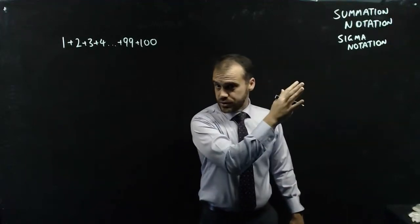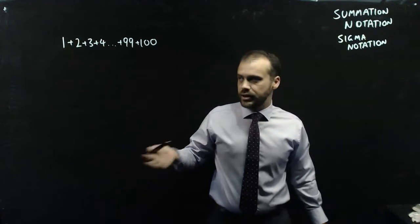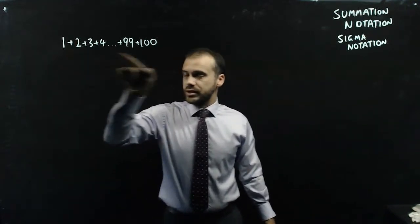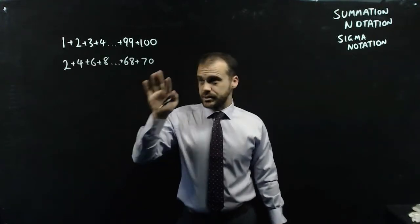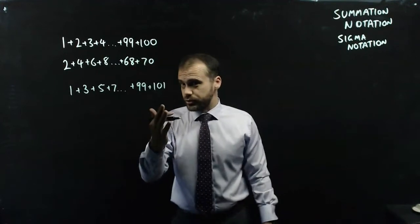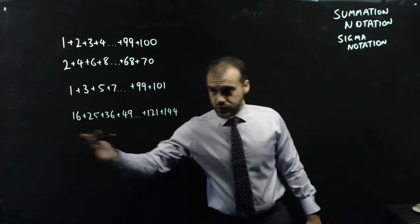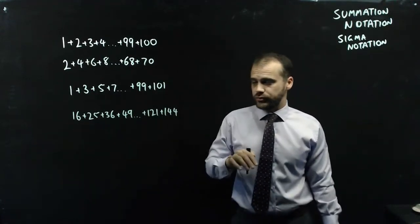Summation notation or sigma notation is used when you want to add a bunch of numbers together. For instance, if you want to add all of the integers together up to 100, or all of the even numbers up to 70, or all of the odd numbers up to 101 starting at 1, or all of the square numbers from 16 to 144.